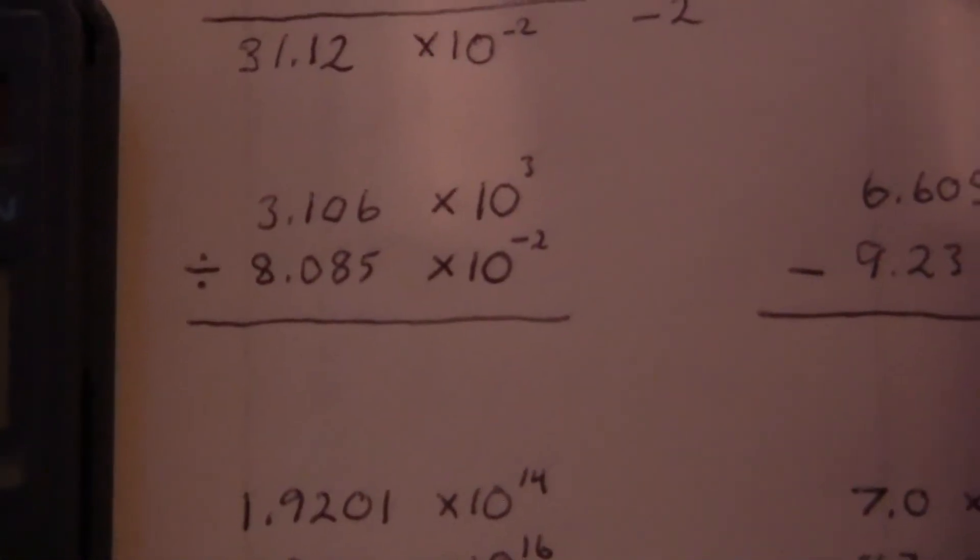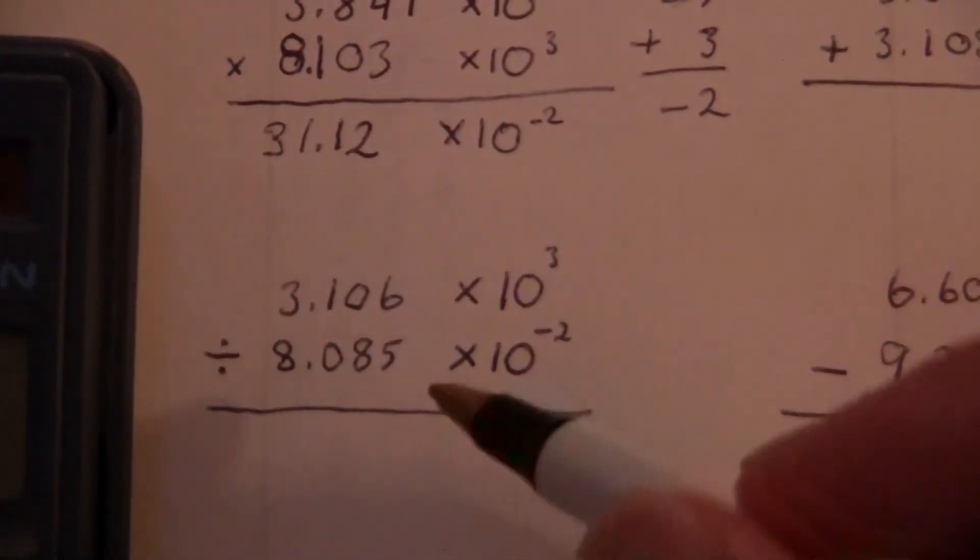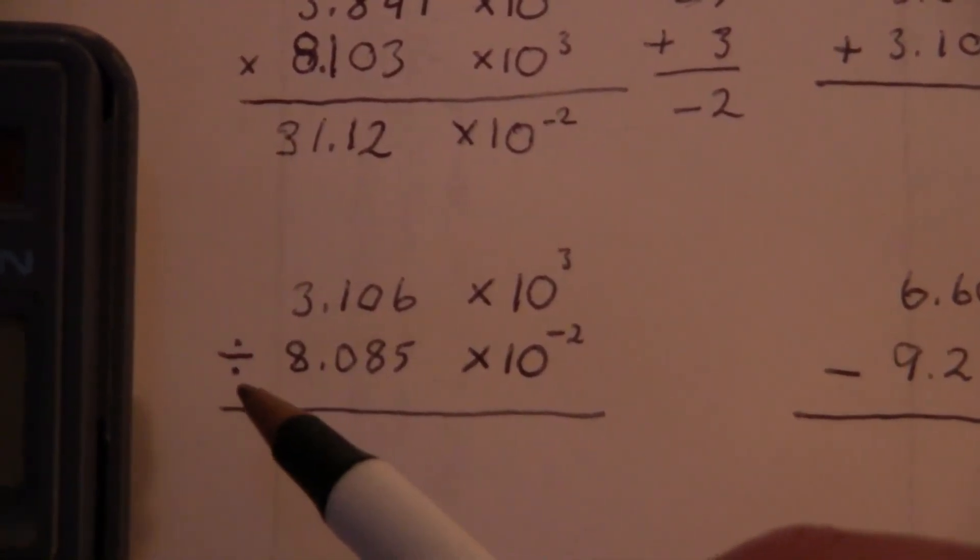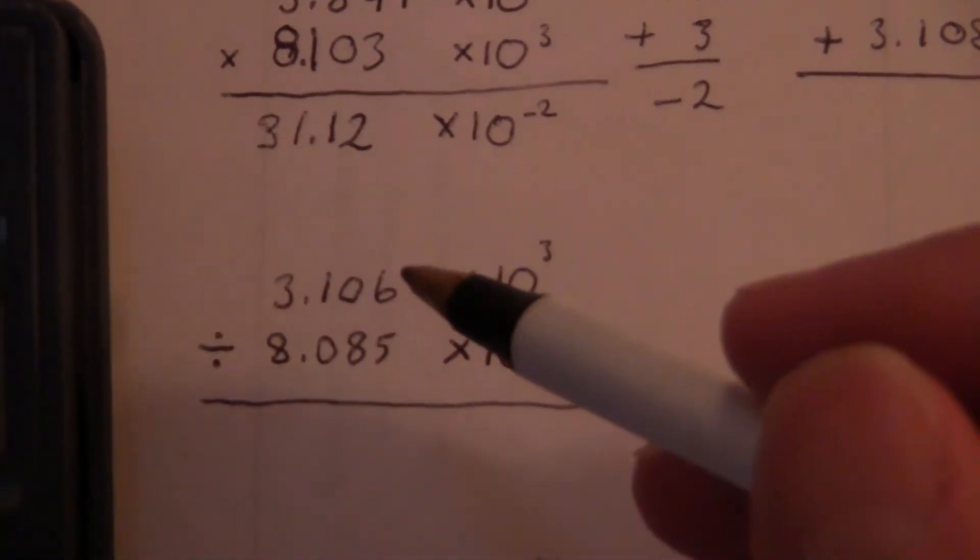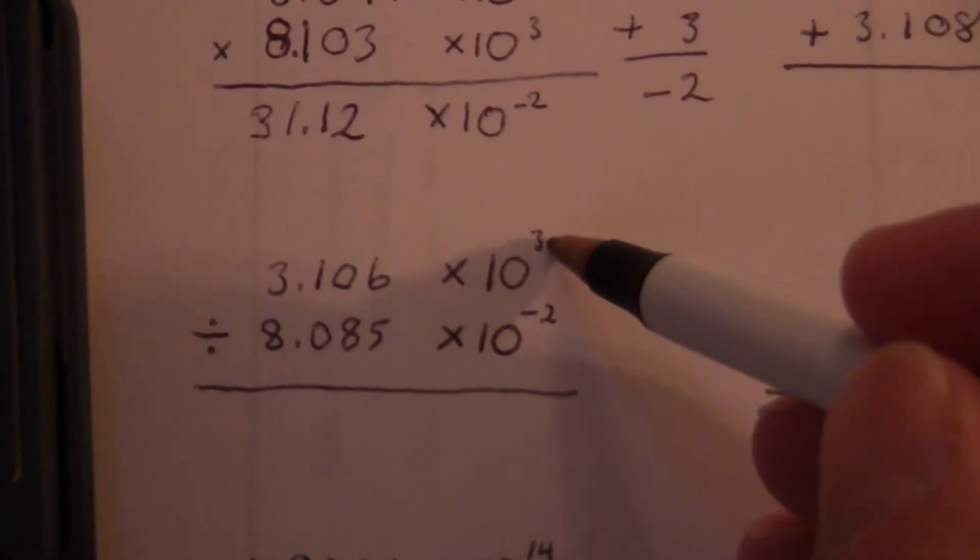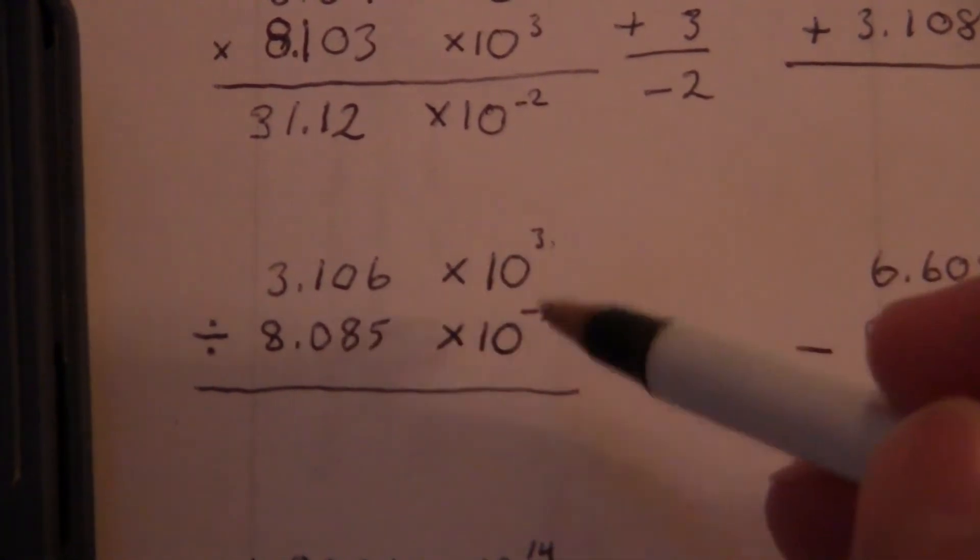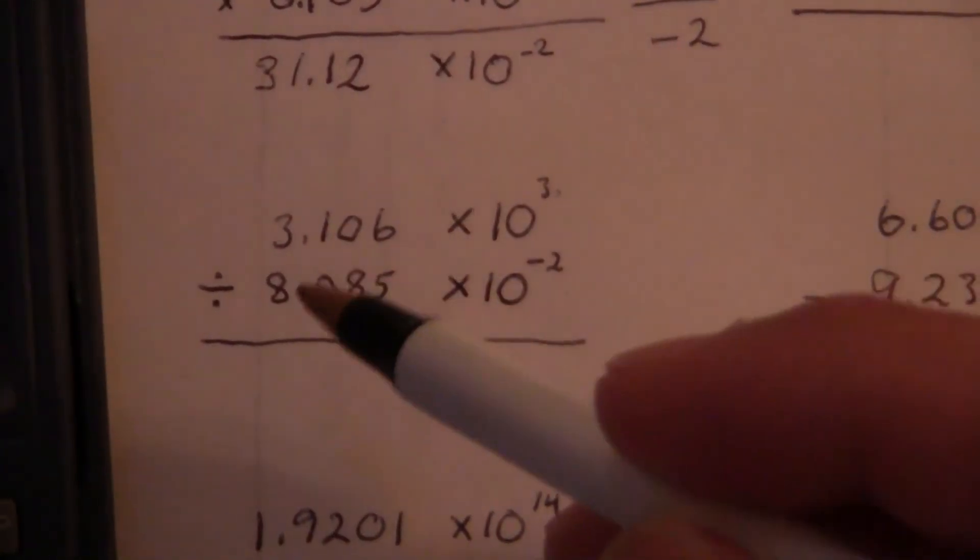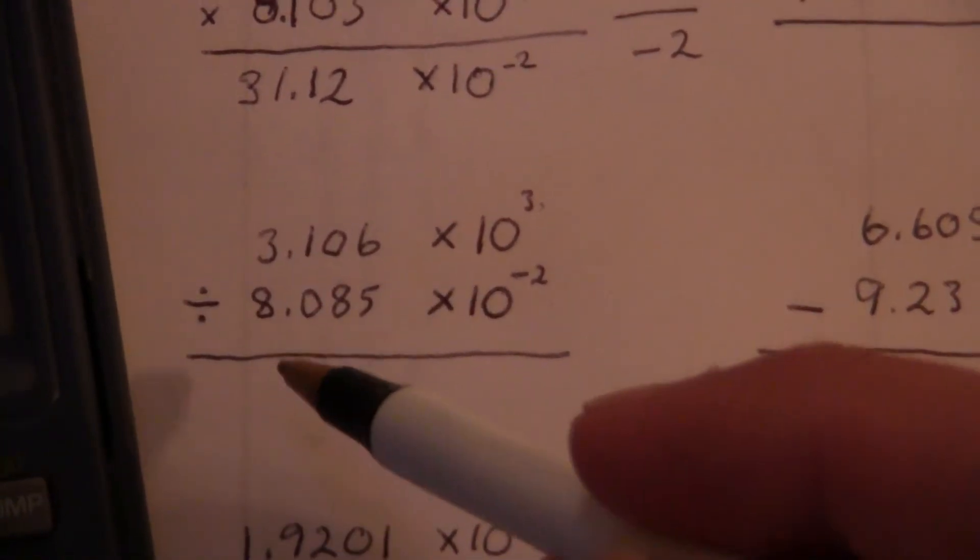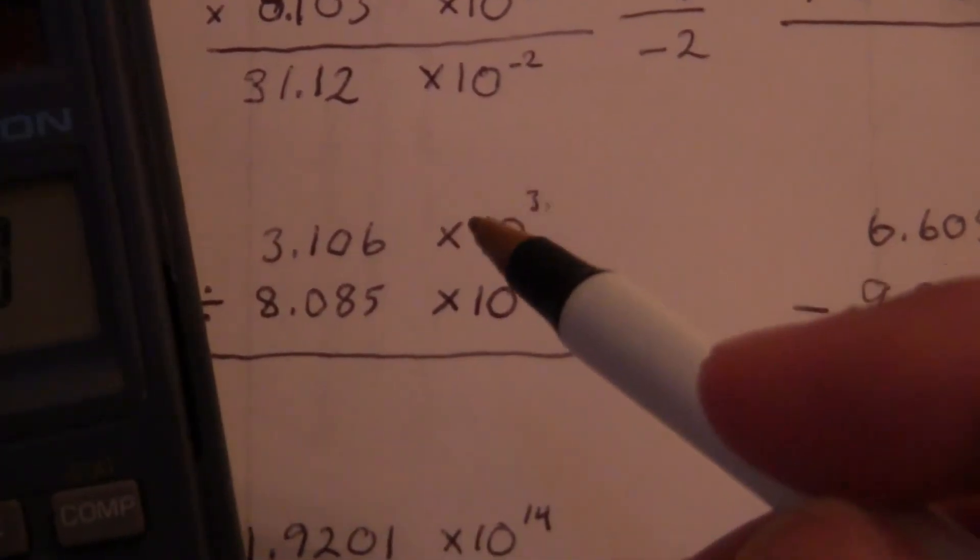Let's look at the next one here. Now we're going to be dividing. We treat it exactly the same. The only difference is instead of adding the exponents, we subtract them. And of course, we divide the numbers. So 3.106 divided by 8.085.